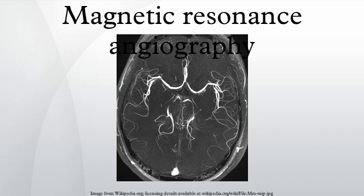Since phase contrast can only acquire flow in one direction at a time, three separate image acquisitions in all three directions must be computed to give the complete image of flow. Despite the slowness of this method, the strength of the technique is that in addition to imaging flowing blood, quantitative measurements of blood flow can be obtained.